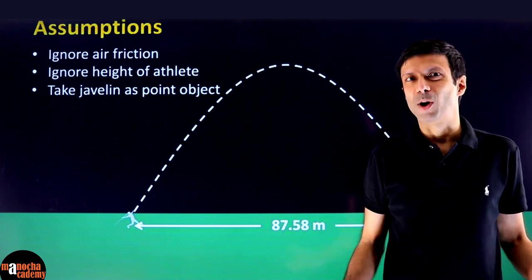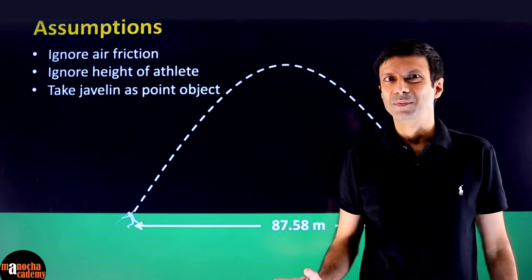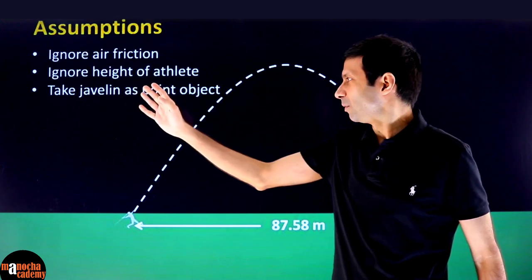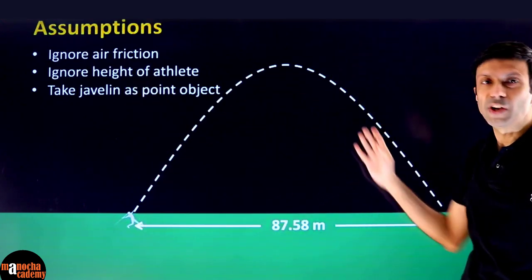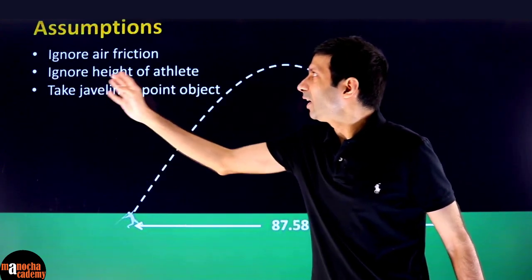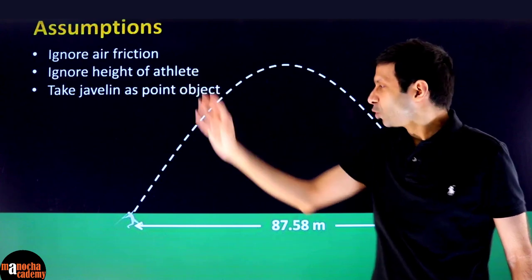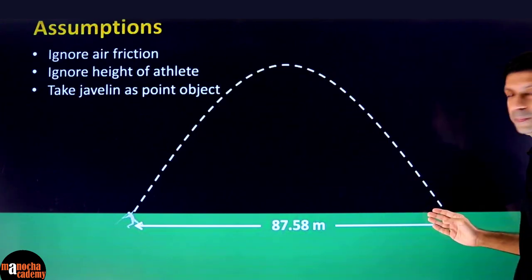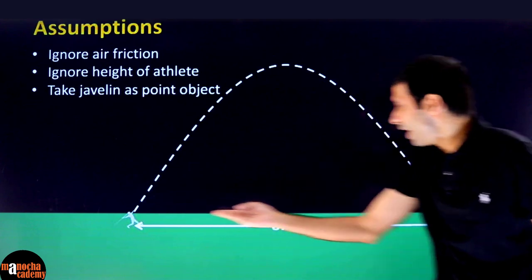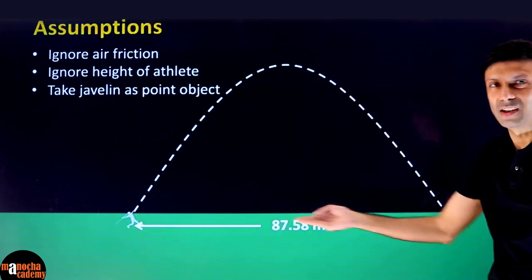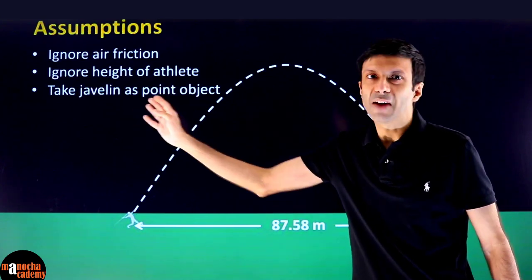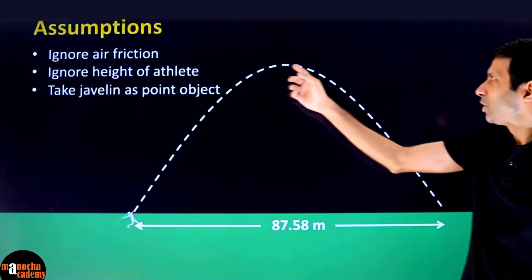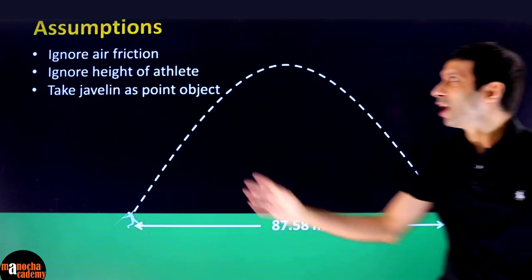Whenever we solve a physics problem, we always make some assumptions to simplify the problem. First, we are going to ignore air friction on the javelin. The other assumption we'll make is we'll ignore the height of the athlete, so we'll assume that the javelin was thrown from the ground level and it fell back to the ground — the level at which the javelin was thrown and where it lands are at the same horizontal level. And of course, we are going to assume that the javelin is a point object, so we'll ignore its rotations. You can consider a javelin like a ball following projectile motion.